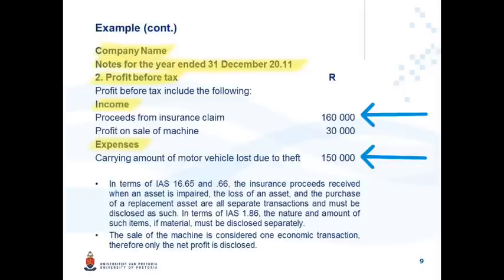In contrast, the profit on sale of the machine was one economic event. There you are allowed to show the net effect — profit on sale of the machine — being the difference between the cash received of 280,000 and the carrying amount of 250,000, giving a net amount of 30,000.